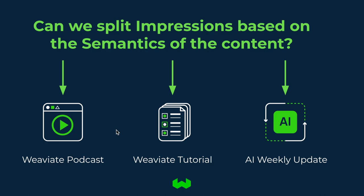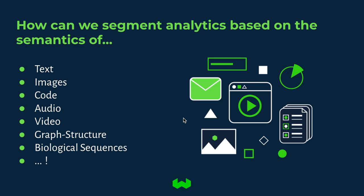For example, without manually annotating the tweets, we can segment them based on their vector distance to phrases like 'Weaviate podcast', 'Weaviate tutorial', and 'AI weekly update' to split tweets by topic category without manual labeling. We can similarly do this for natural language processing, computer vision, or robotics. We perform segmentation to split the metric we care about — like impressions on tweets or clicks on an ad — and we want to segment these analytics based on the semantics of high-dimensional data objects like raw text, images, code, audio, videos, graph structure, and biological sequences.